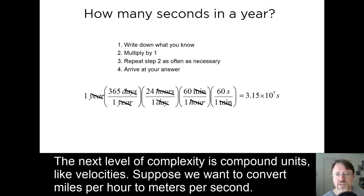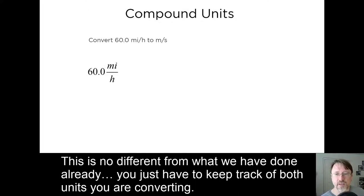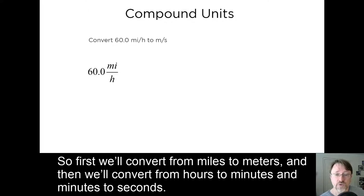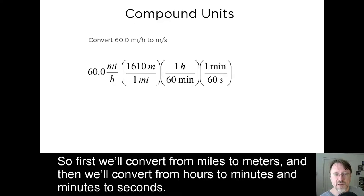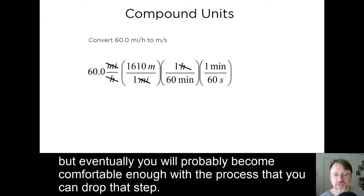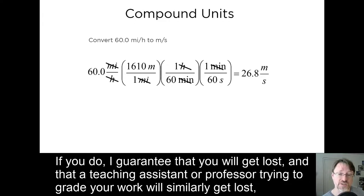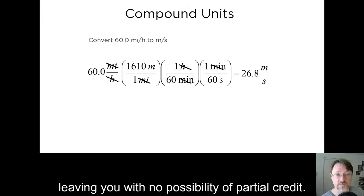The next level of complexity is compound units, like velocities. Suppose we want to convert miles per hour to meters per second. This is no different from what you've done already. You just have to keep track of both units you are converting. So first, we'll convert from miles to meters. And then, we'll convert from hours to minutes and minutes to seconds. If you really need to, you can cross out the cancelling units. But eventually, you will probably become comfortable enough with this process that you can drop that step. But whatever you do, do not drop writing the units in the first place. If you do, I guarantee that you will get lost. And that a teaching assistant or professor trying to grade your work will similarly get lost, leaving you with no possibility of partial credit.